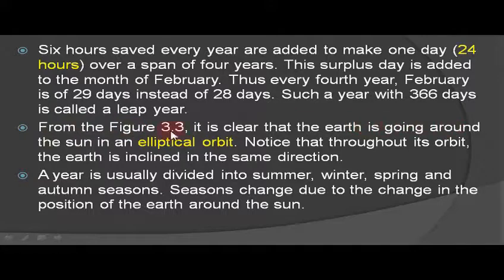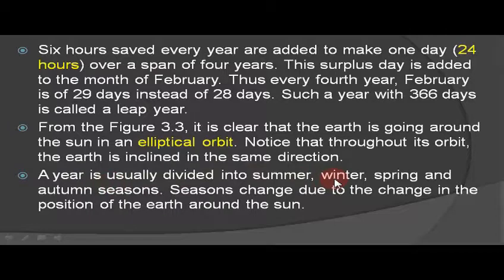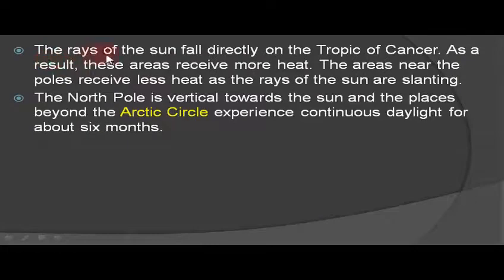From figure 3.3 it is clear that the earth goes around the sun in an elliptical orbit. Throughout its orbit, the earth is inclined in the same direction. A year is usually divided into summer, winter, spring, and autumn seasons. Seasons change due to the change in the position of the earth around the sun.